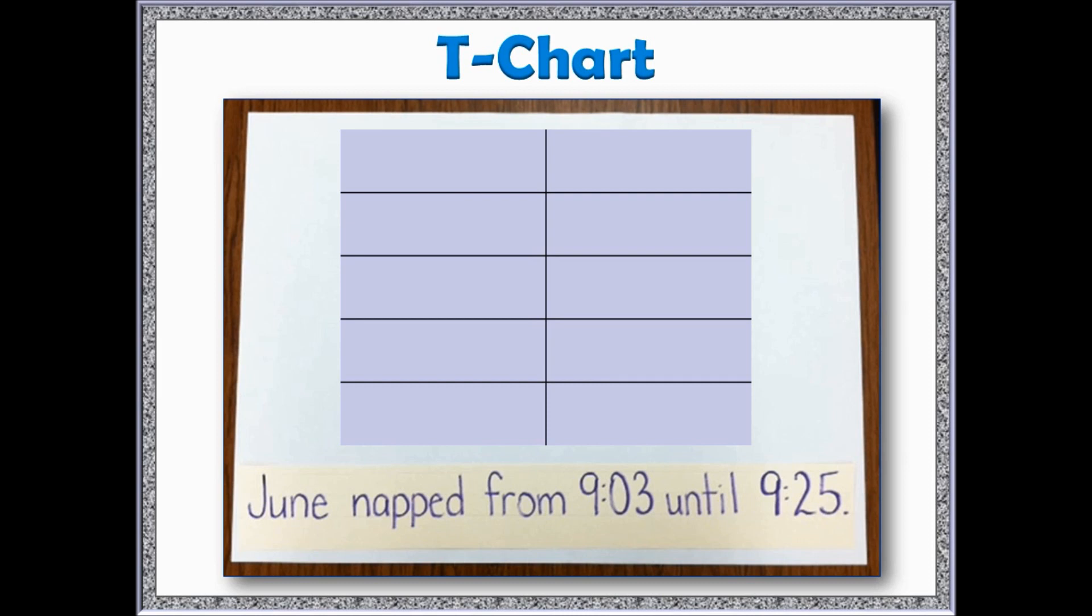Let's take a look at how a student might solve a problem using a T-chart. Again, the problem was June napped from 9:03 until 9:25 and we are trying to find the total length of June's nap. I would start by recording the start time of June's nap and write start time. Then it's up to me. I'm going to do whatever types of jumps I want.